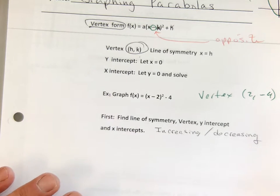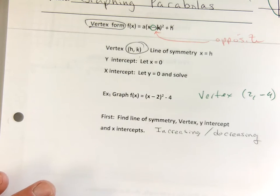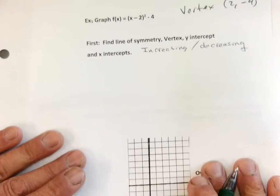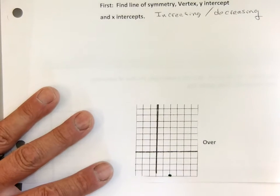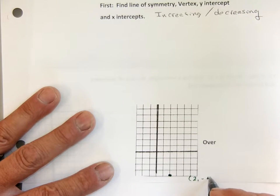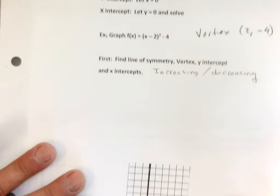So I'm going to go positive 2, negative 4 on my graph. It's right there. There's my vertex: 2, negative 4.